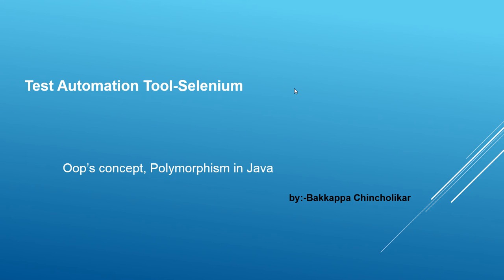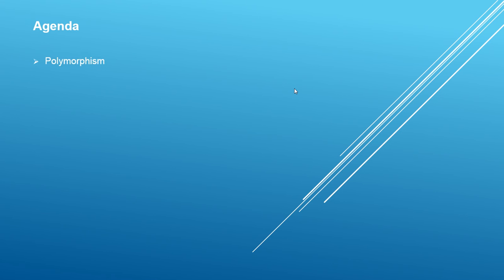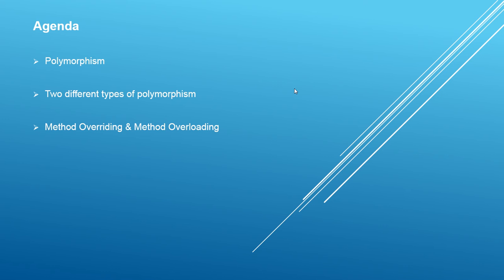Hey, hi everyone, this is Bakkapa Chinchulikar. Welcome back to Test Automation Tool Selenium. In today's video session we'll be discussing what is polymorphism, two different types of polymorphism, what is method overriding and method overloading.